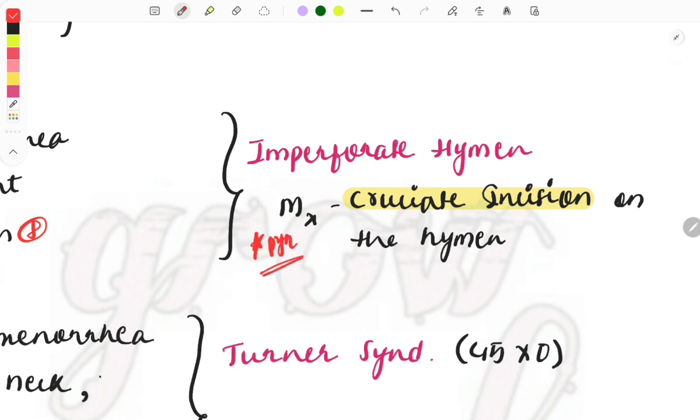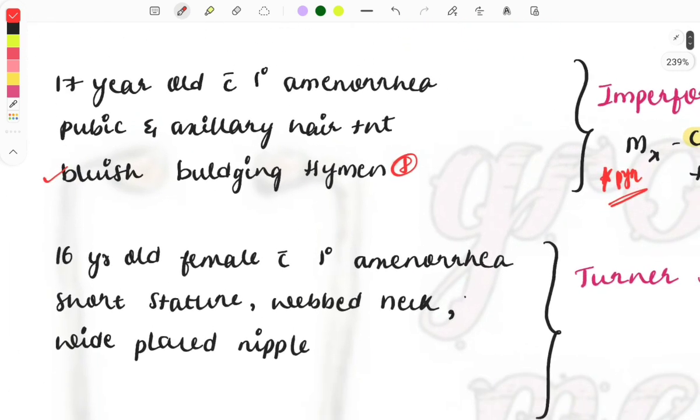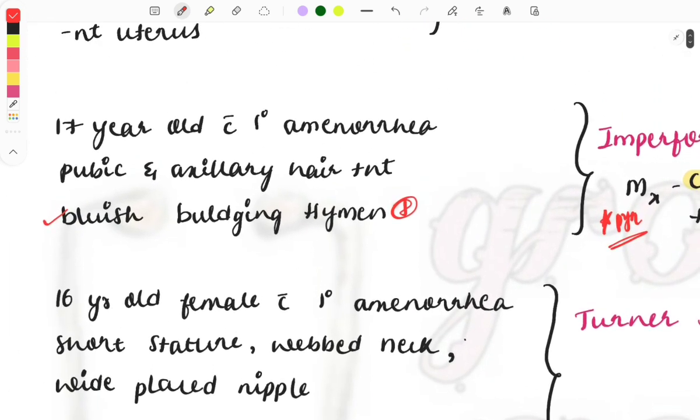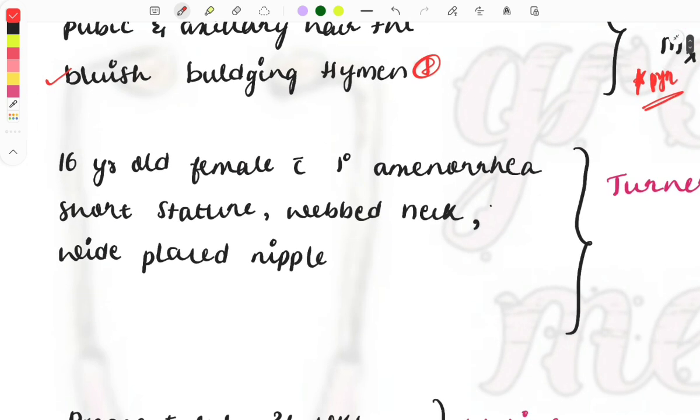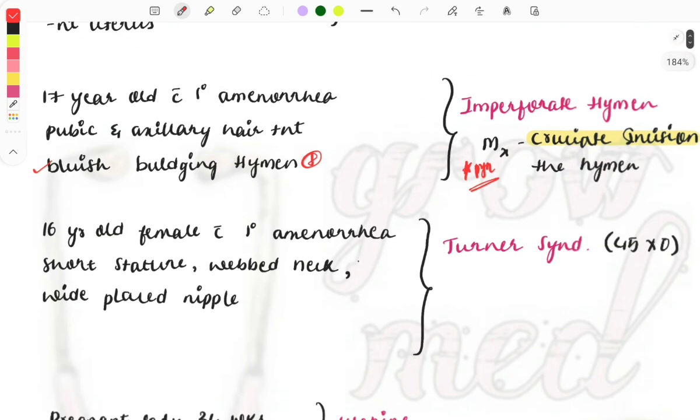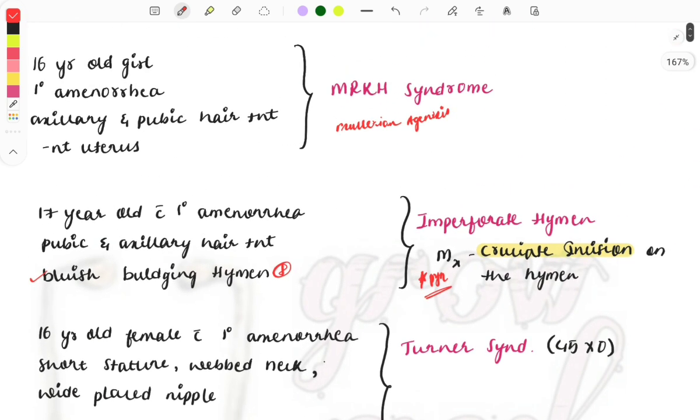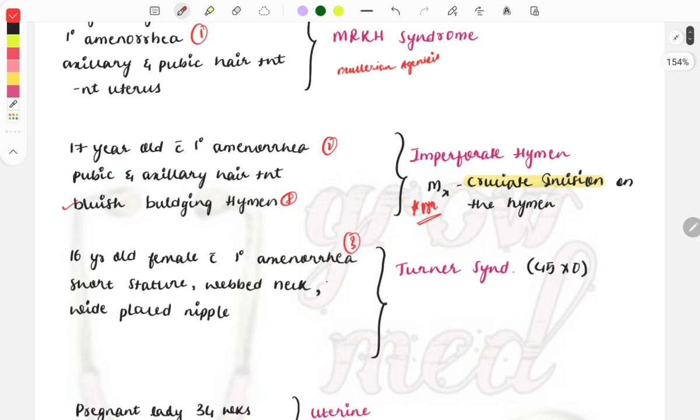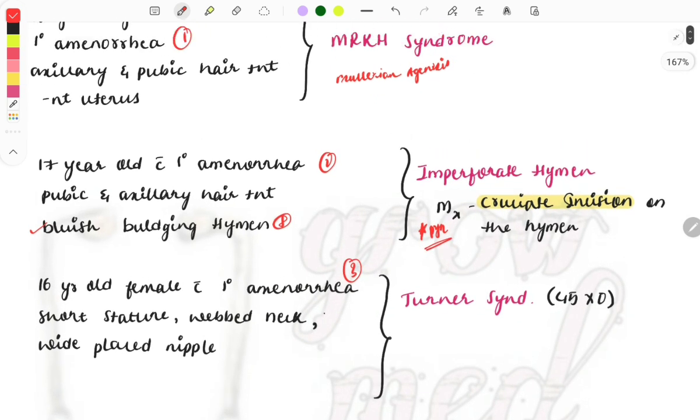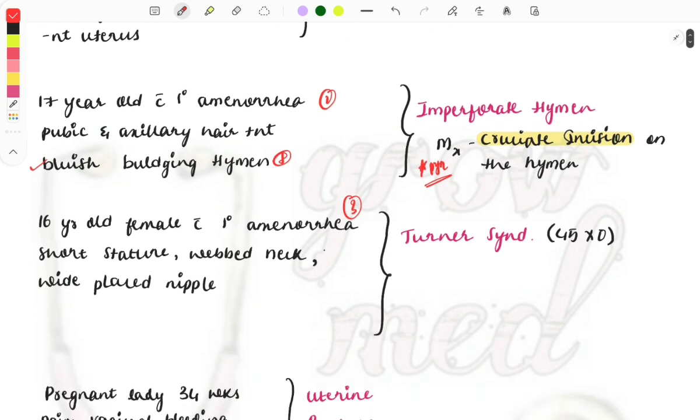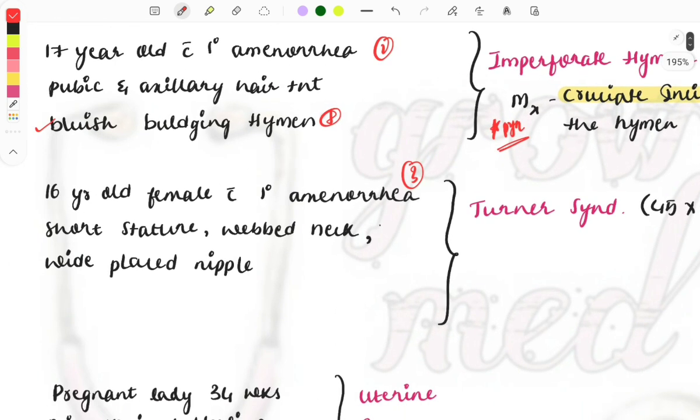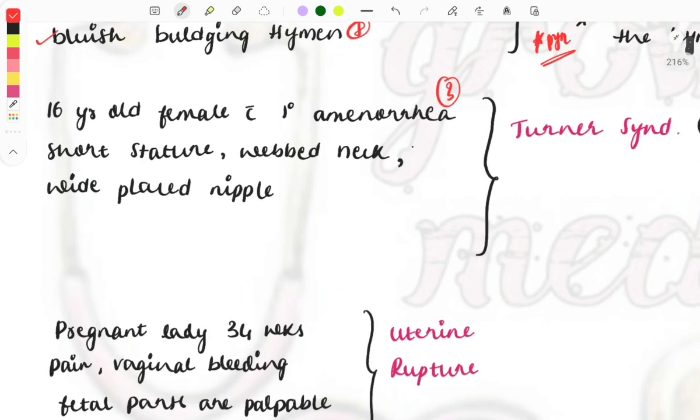Management is cruciate incision on the hymen. Another female, 16 years old with primary amenorrhea - you can see here how many primary amenorrhea cases: one, two, three, but all three are different.